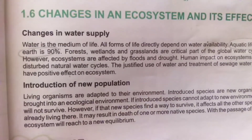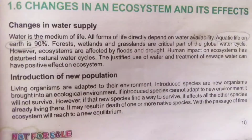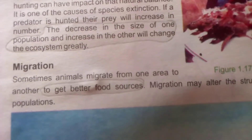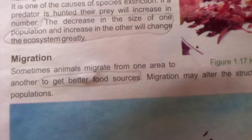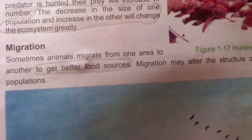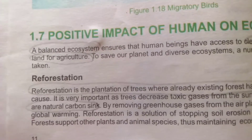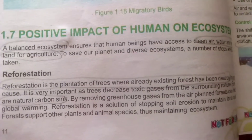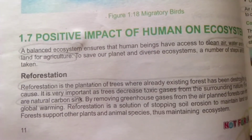Aquatic life on Earth is 90%. The decrease in the size of one population and increase in the other will change the ecosystem greatly. Sometimes animals migrate from one area to another to get better food resources. A balanced ecosystem ensures that human beings have access to clean air, water, and land for agriculture.